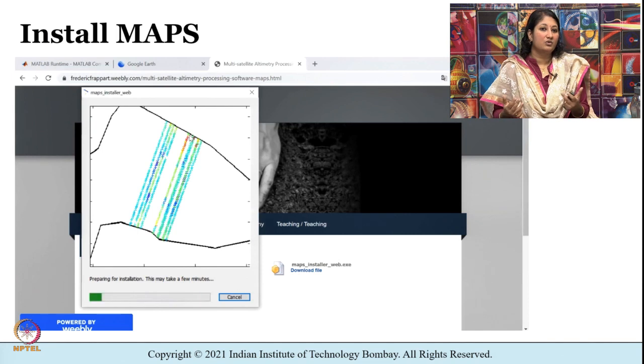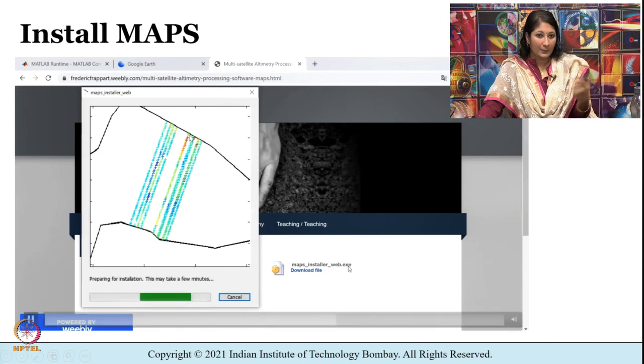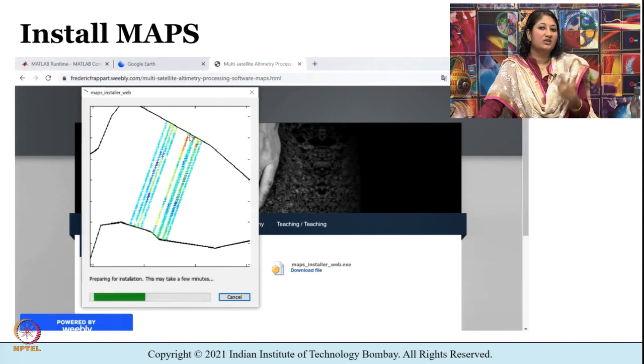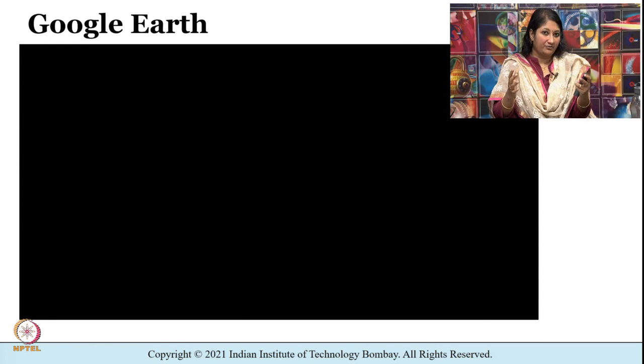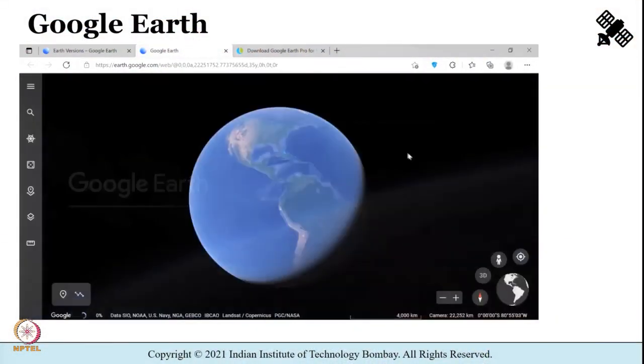Now let us see how to use MAPS. You first download the .exe file and once the download is completed you click on it for installation to begin. The input data for MAPS can be created using Google Earth. If I want to identify a water body crossed by a particular satellite like Saral or Jason, I can create a polygon shapefile around the water body to use as input in MAPS.